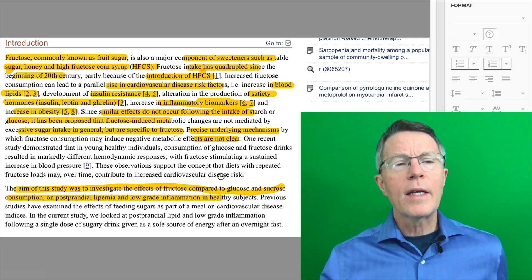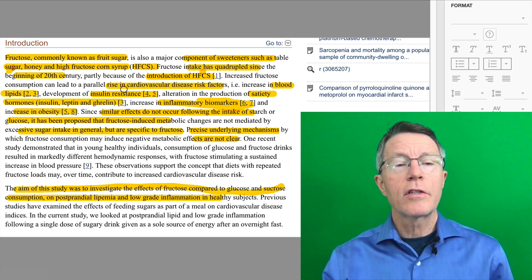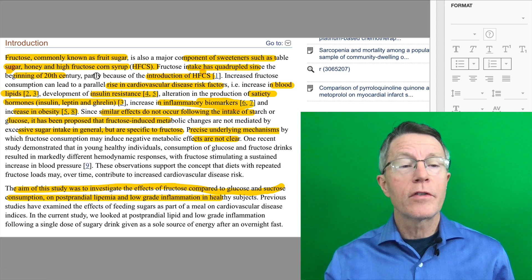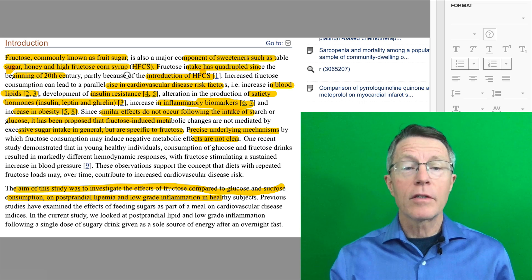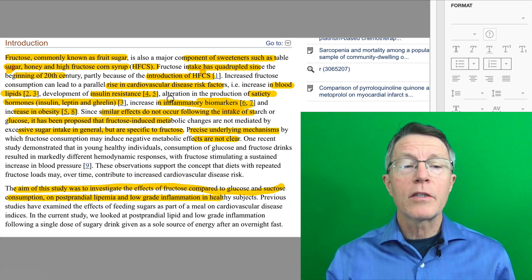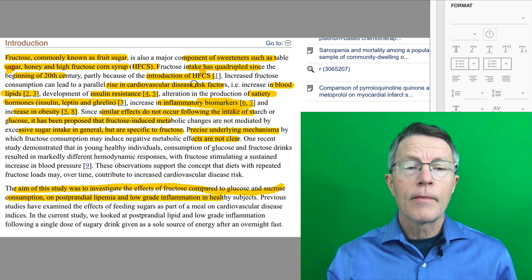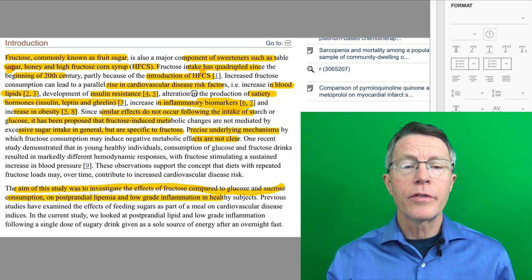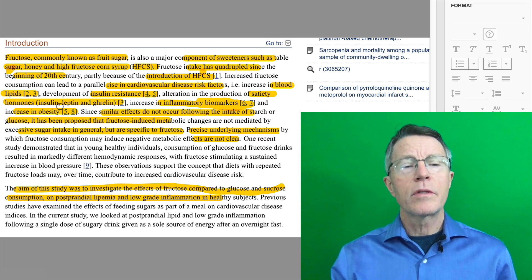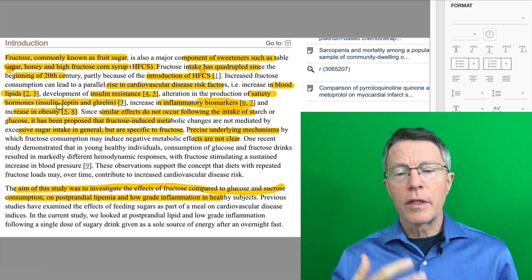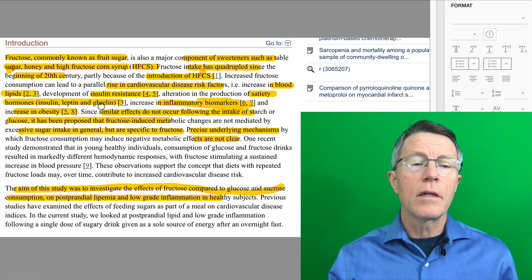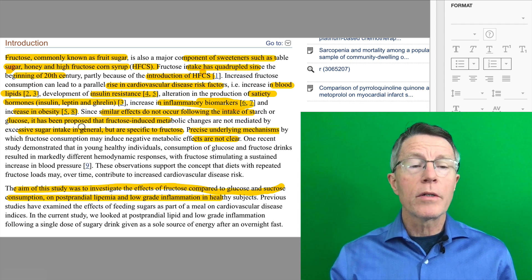Now, why did they do this? According to them, fructose is commonly known as fruit sugar. It's a component of sweeteners such as sugar, honey, and high fructose corn syrup. High fructose corn syrup has quadrupled since the beginning of the 20th century when it was introduced into a lot of foods in terms of food processing. There's been a concomitant rise in cardiovascular disease, blood lipids, cholesterol, insulin resistance, satiety hormones, hormones regarding whether I'm hungry or not. That's insulin, leptin, and ghrelin, inflammatory markers, and obesity.